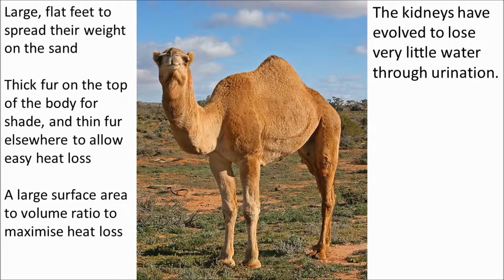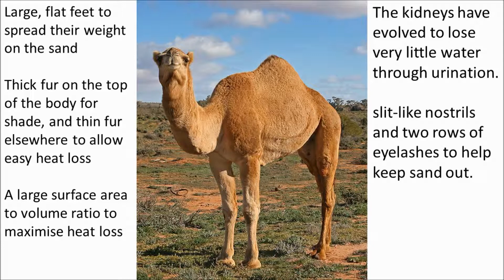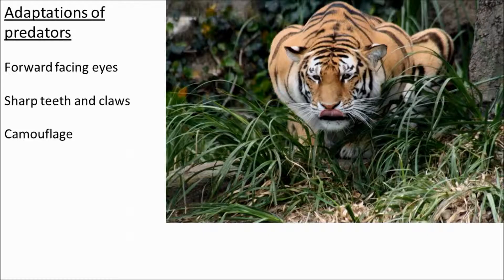There are certain adaptations that enable predators to be really efficient hunters. Forward-facing eyes give predators excellent distance and depth perception, which is really important when chasing and bringing down prey. Sharp teeth and claws are used for immobilising prey, and camouflage allows the predator to sneak up on the prey animal.